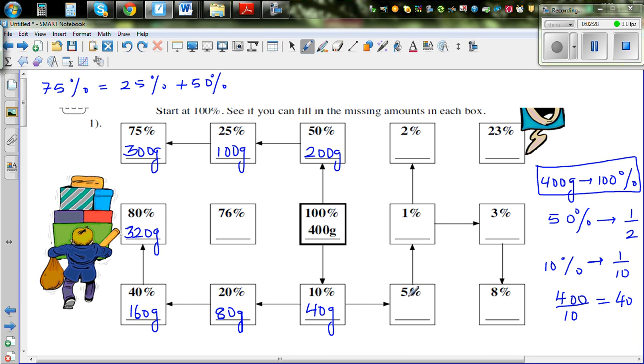So from 10% you can find 5% because it's half of 10%. So this is 20 grams. Now from 5% you can find 1% because 1% is one-fifth of 5%. So you have to find one-fifth of this. So 20 divided by 5 is 4.